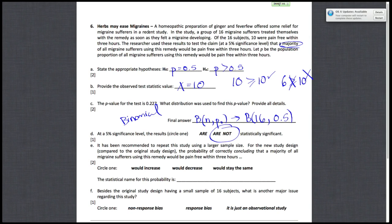All right, so next, part E. It has been recommended to repeat this study using a larger sample size. For a new study design, the probability of correctly concluding that a majority of all migraine sufferers using this remedy would be pain-free within 3 hours would increase, decrease, or stay the same. So the probability of correctly concluding that a majority would be pain-free is the probability of accepting HA given that HA is true, which is called the power of your test.